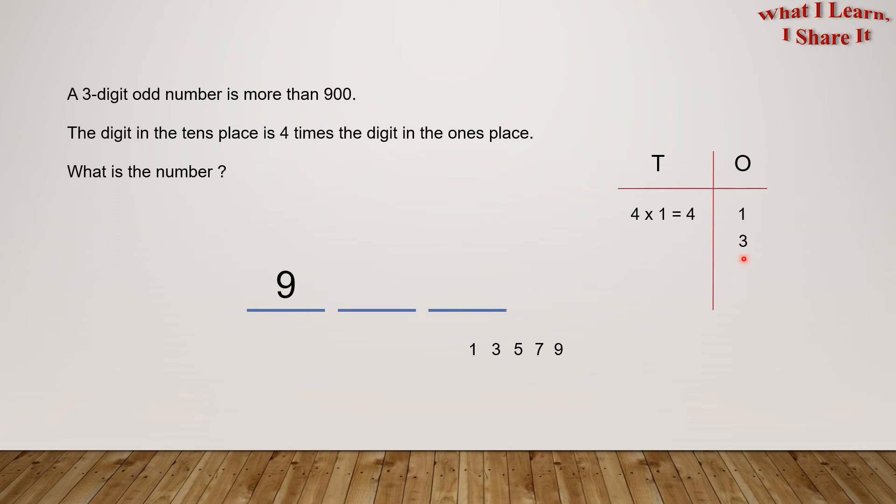If the digit in the ones place is three, then the digit in the tens place will be four times three is twelve. But this is not possible. This means that three, five, seven, or nine cannot come in the ones place.